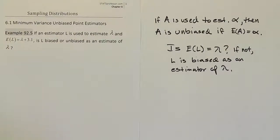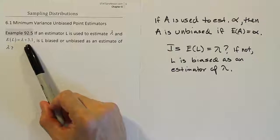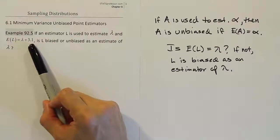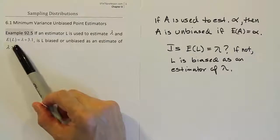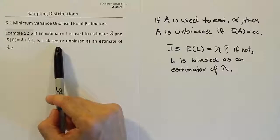As it stands now, because the expected value of this variable L is not equal to the thing exactly that it's trying to estimate, it actually overestimates consistently because it always looks on average 3.1 higher. That means it's biased. Remember, biased is bad. That's important. Bias is not a good thing in an estimator.